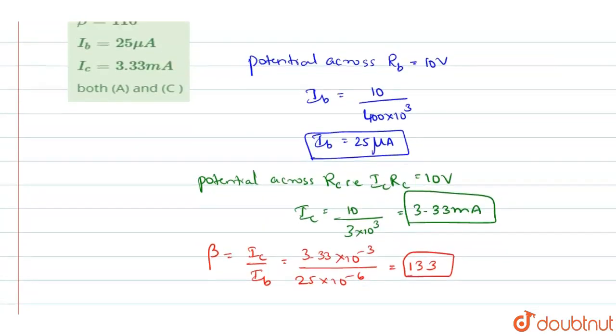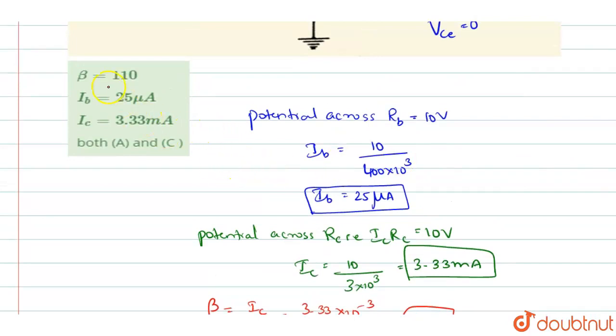Now, see to the options you have. Beta is 110 they have given, no, we have got 133. So, that is wrong. IB is 25 microampere, yes, that is true. IC is 3.33 milliampere, that is also true. So, you can say that option B and C, both are true.